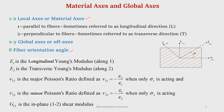The engineering constants in material axis include: E1, the longitudinal Young's modulus along direction 1; E2, the transverse Young's modulus along direction 2; ν12, the major Poisson's ratio (ratio of strain along direction 2 to strain along direction 1 when stress is applied along direction 1); ν21, the minor Poisson's ratio; and G12, the shear modulus in plane 1-2.